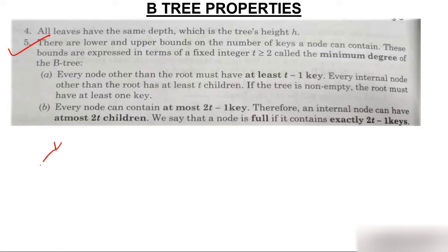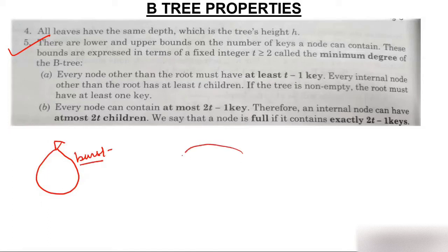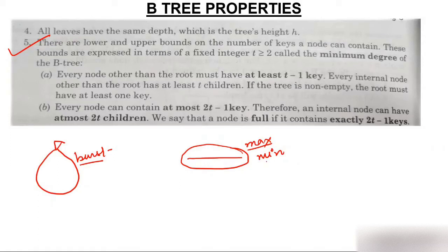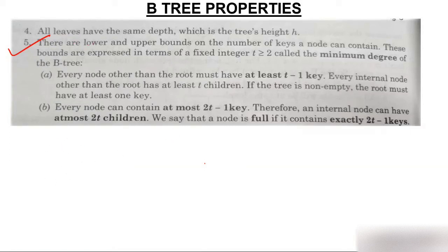The fifth and very important property relates to bounds on keys. Like a balloon — every balloon has a capacity and will burst if you blow too much air — a B-tree node also has a maximum limit and a minimum limit on how many elements it can contain. There are lower and upper bounds on the number of keys a node can contain.